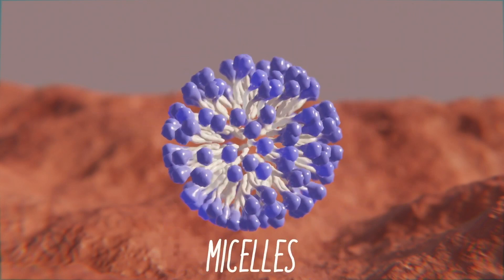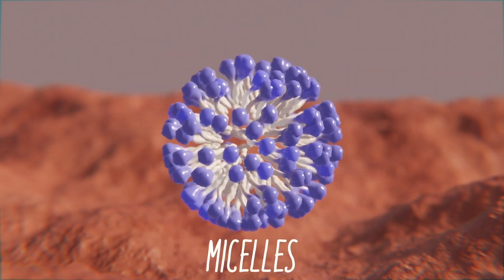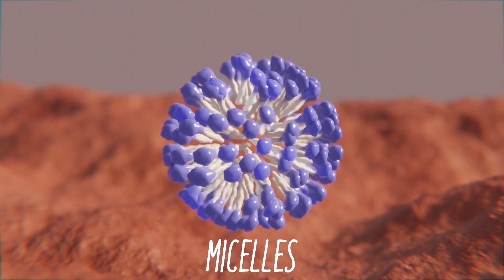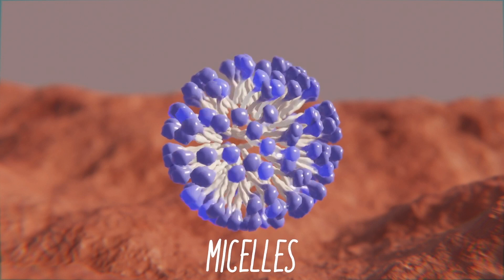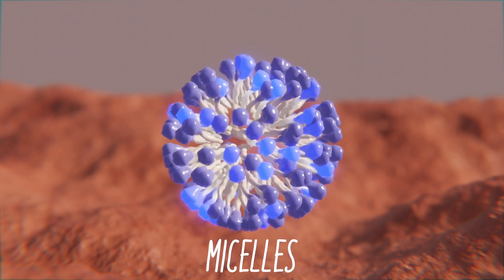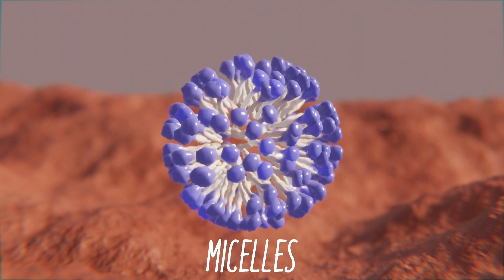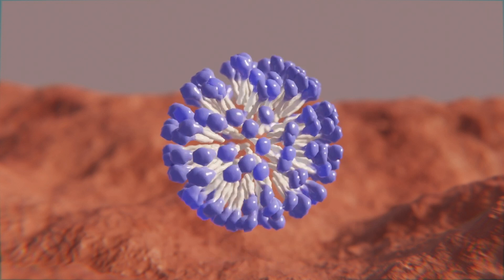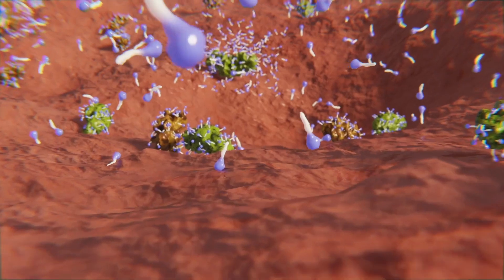If we take a closer look at a micelle, we see the water-loving heads on the outside of the beads closest to water, and the water-hating tails on the inside of the beads, keeping away from water.